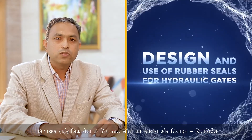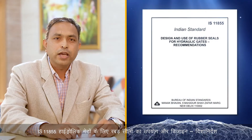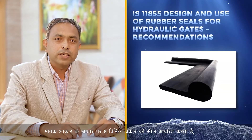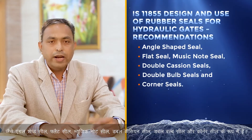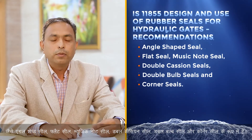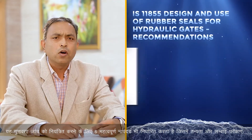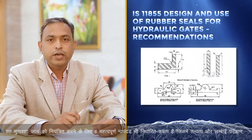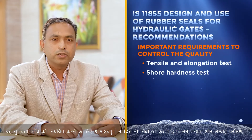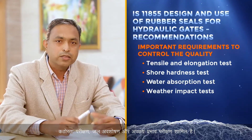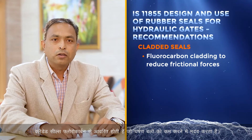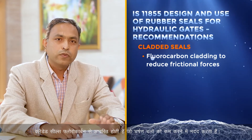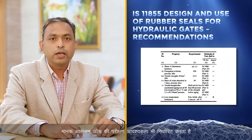IS 11855 covers the design and use of rubber seals for hydraulic gates. The standard covers six different types of seals depending upon their shapes: angle-shaped seal, flat seal, music node seal, double caisson seals, double bulb seals and corner seals. It also lays down six important quality check parameters comprising tensile and elongation test, shore hardness test, water absorption, weather impact test, and materials. The standard covers cladded seals, where fluorocarbon cladding is provided to reduce frictional forces, and also gives test requirements for the adhesion test.